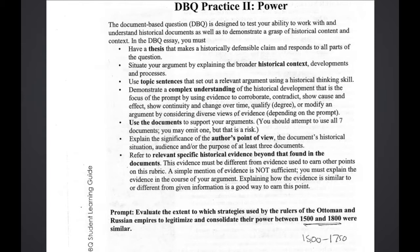You're going to circle task words. In this prompt, 'evaluate' is the task word. 'Extent' means you have to give some sense of degree — extremely similar or extremely different. Then underline key information, and you may want to box parameters as well. Key information might be something like Ottoman Empire, Russian Empire, between the period 1500 and 1800.